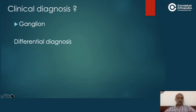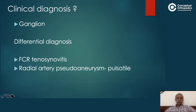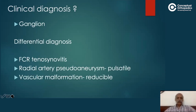The differential diagnoses considered included flexor carpi radialis tenosynovitis as one possibility. Radial artery pseudoaneurysm was discussed but excluded because the swelling was not pulsatile. Vascular malformation was also discussed but excluded because the swelling was not reducible. Both radial artery pseudoaneurysm and vascular malformation were therefore considered remote possibilities.